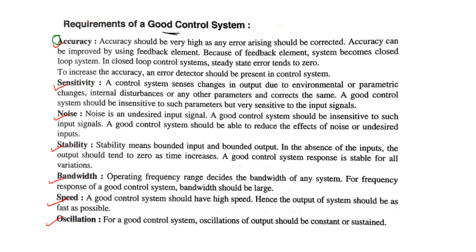Now we discuss bandwidth. The operating frequency range decides the bandwidth of the system. For the frequency response of a good control system, the bandwidth should be large — if bandwidth is large then the frequency range is large and our response is very good.